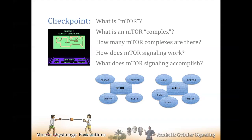What does mTOR signaling accomplish? It depends on complex one versus complex two. Complex two handles very comprehensive metabolic signaling — the breadth of metabolism: glucose uptake, ion transport, cell volume control, epithelial interactions, heart stuff, liver and cardiac function, actin cytoskeleton — lots of survival stuff. Complex one? Grow, grow, grow, divide, grow, grow — that's complex one, and it's much better understood than complex two.